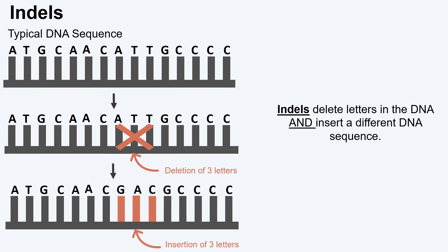Insertions and deletions can both occur together. This variant type is called an indel. Indels delete a letter or letters of the DNA sequence and add a letter or letters to the DNA sequence. In this example, the letters A, T, T are deleted and G, A, C are added in their place.